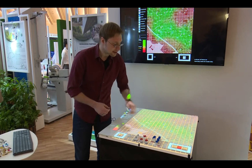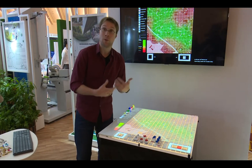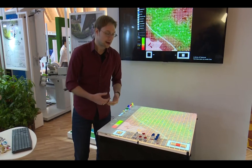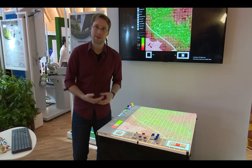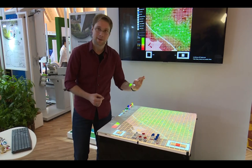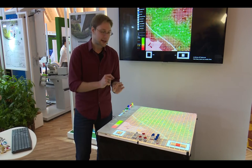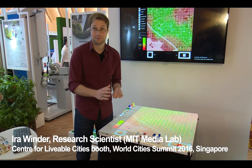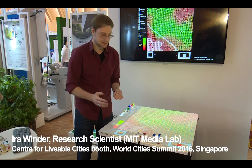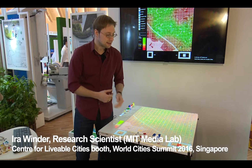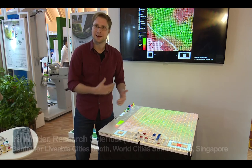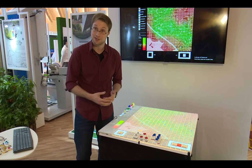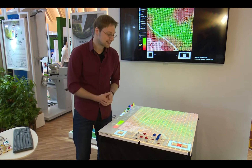In green you have areas scoring well in walkability, in red not so well. Our measure of walkability is: if I were to stand there, what good access do I have within walkable distance of a number of amenities — for instance, six. The walkable distance in our case is programmed to be about 400 meters, the typical Singaporean walking distance.